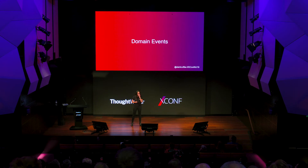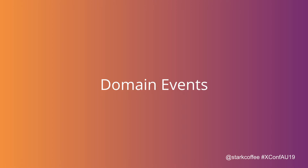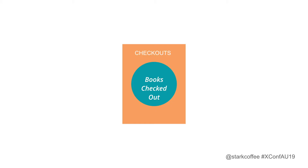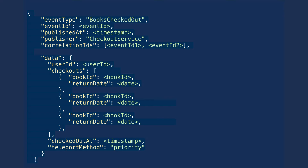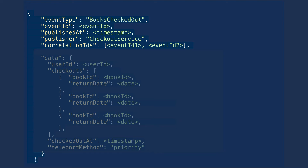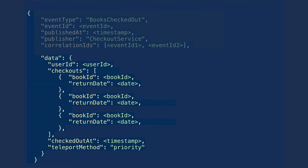The consensus is to focus on domain events for these workflows. As an example, going back to the books checked out event — here's a possibility in JSON. We've got some metadata common to all events: the type of the event (books checked out), an event ID, and correlation IDs, which are important so we can trace events through the system, which server published it and when. Then we have the actual data: the user ID who checked out, the book IDs, when they did that, and the teleport method chosen at the time.